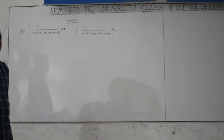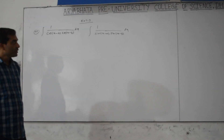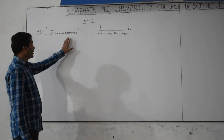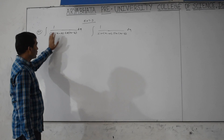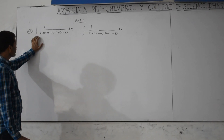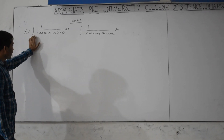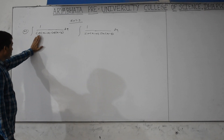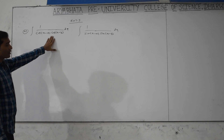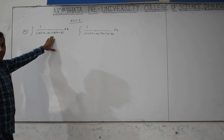Hi students, good morning. Yesterday we discussed Exercise 7.3, function number 3.5: integration of 1 by cos(x minus a) into cos(x minus b) dx.